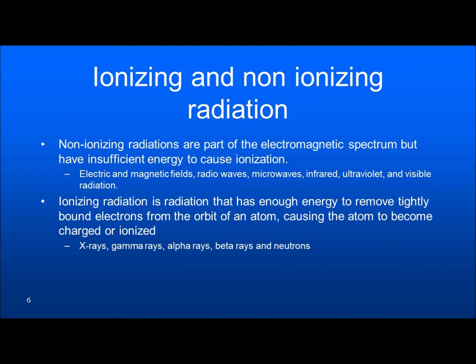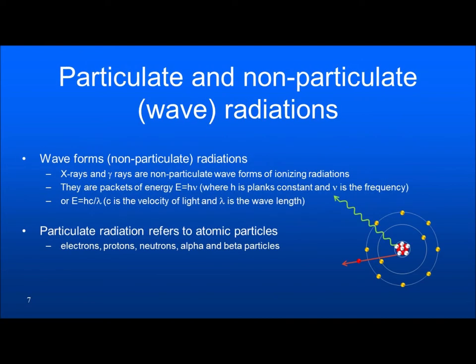So you get a positive and negative ion pair. X-rays, gamma rays, alpha rays, beta rays, and neutrons are all ionizing radiation — they can produce ionization. The other way of classifying radiation is as particulate radiation and non-particulate radiation. Waveforms are non-particulate radiation. For example, X-rays and gamma rays are non-particulate waveform ionizing radiation.